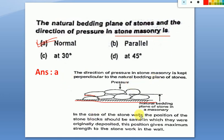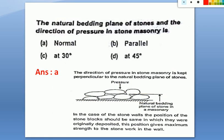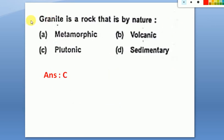In the case of stone walls, the position of stone blocks should be the same as originally deposited, giving maximum strength. When pressure is applied, it is normal to the bedding plane. Looking at the cross-section, you can easily see that the pressure is normal to the bedding plane.